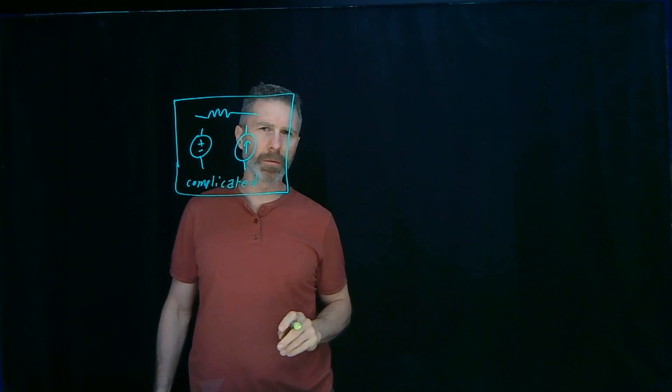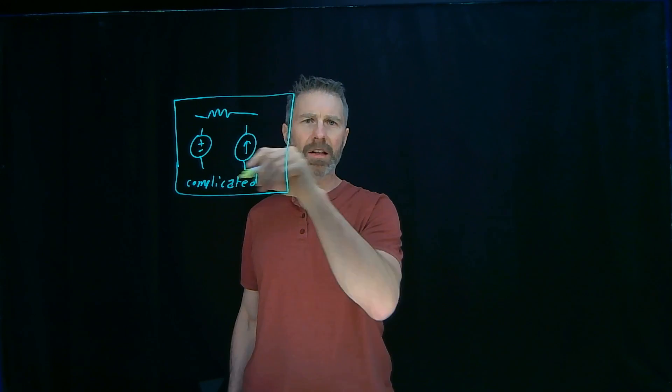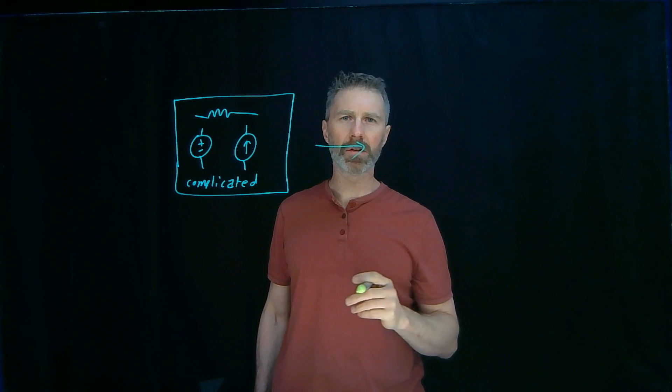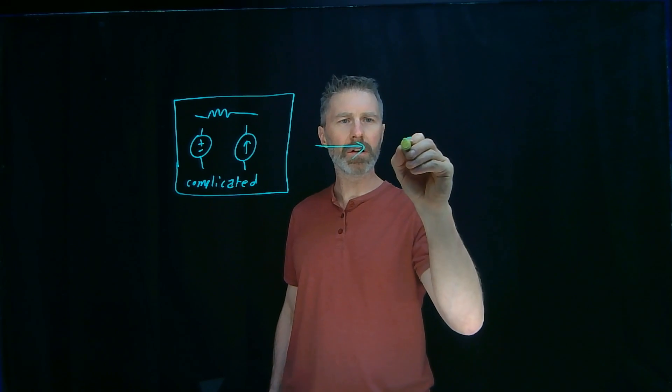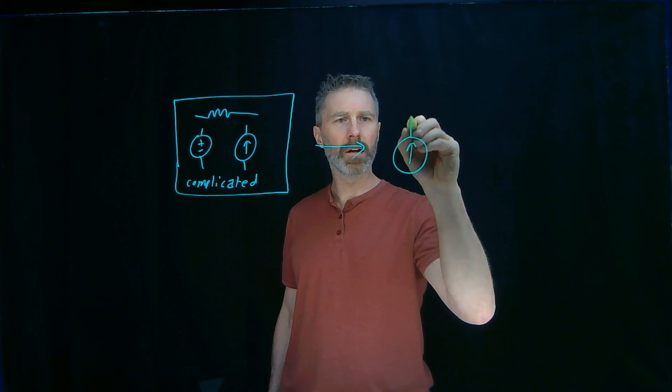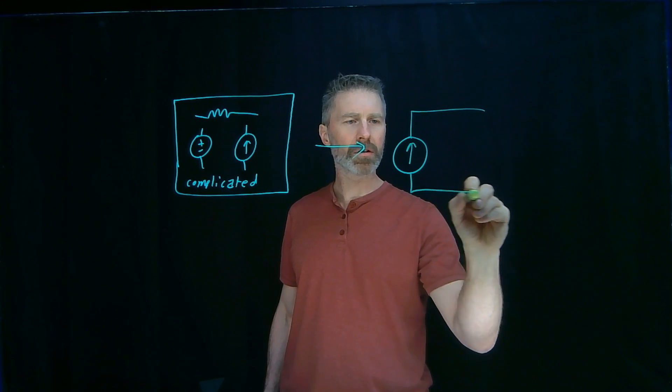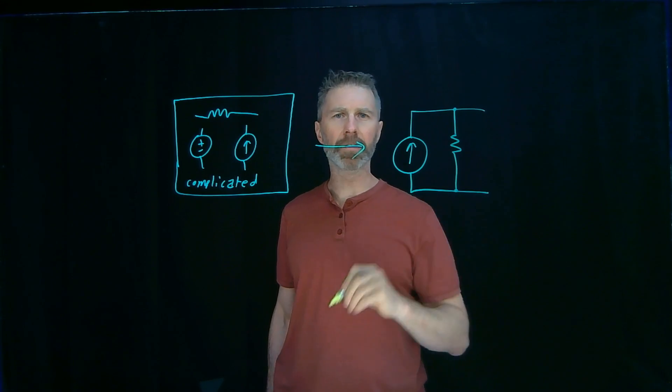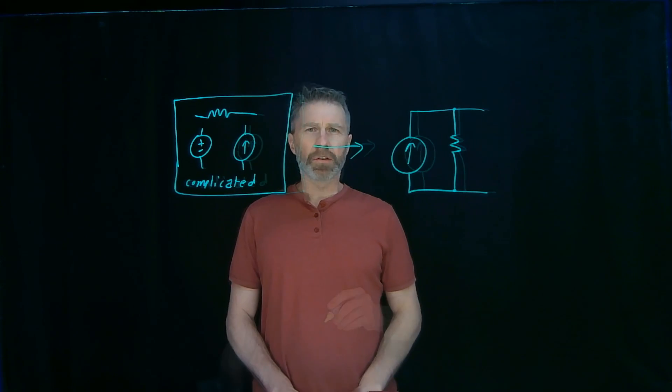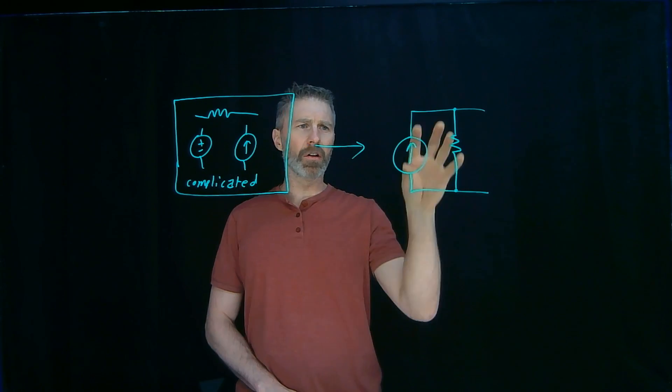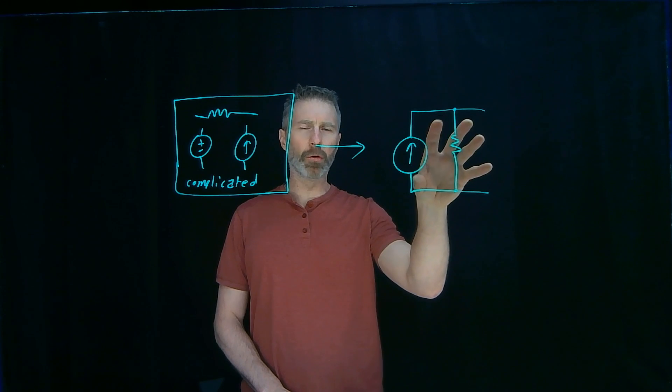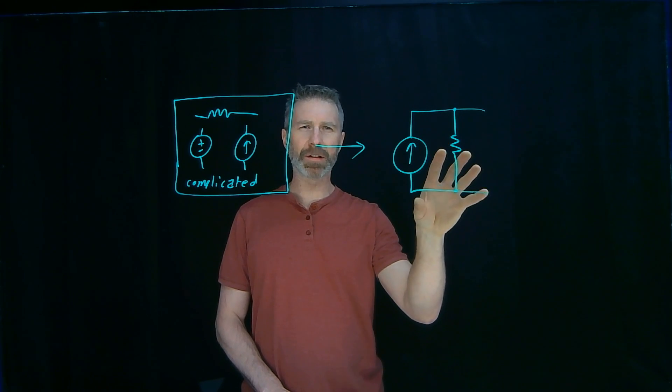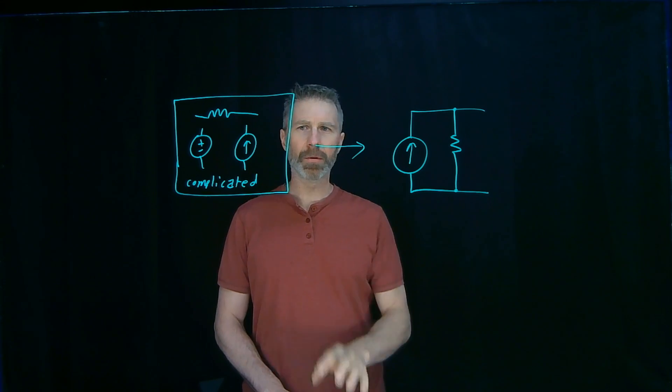I mean, it can be a really simple arrangement as well. Norton's theorem says that any arrangement of resistors, current sources and voltage sources can be simplified down to a current source with a corresponding resistor in parallel. The process of converting from this complicated circuit into the simpler Norton equivalent—I really don't like Nortonized. Thevenized sounds pretty cool, Nortonized doesn't sound quite as cool. Anyway,